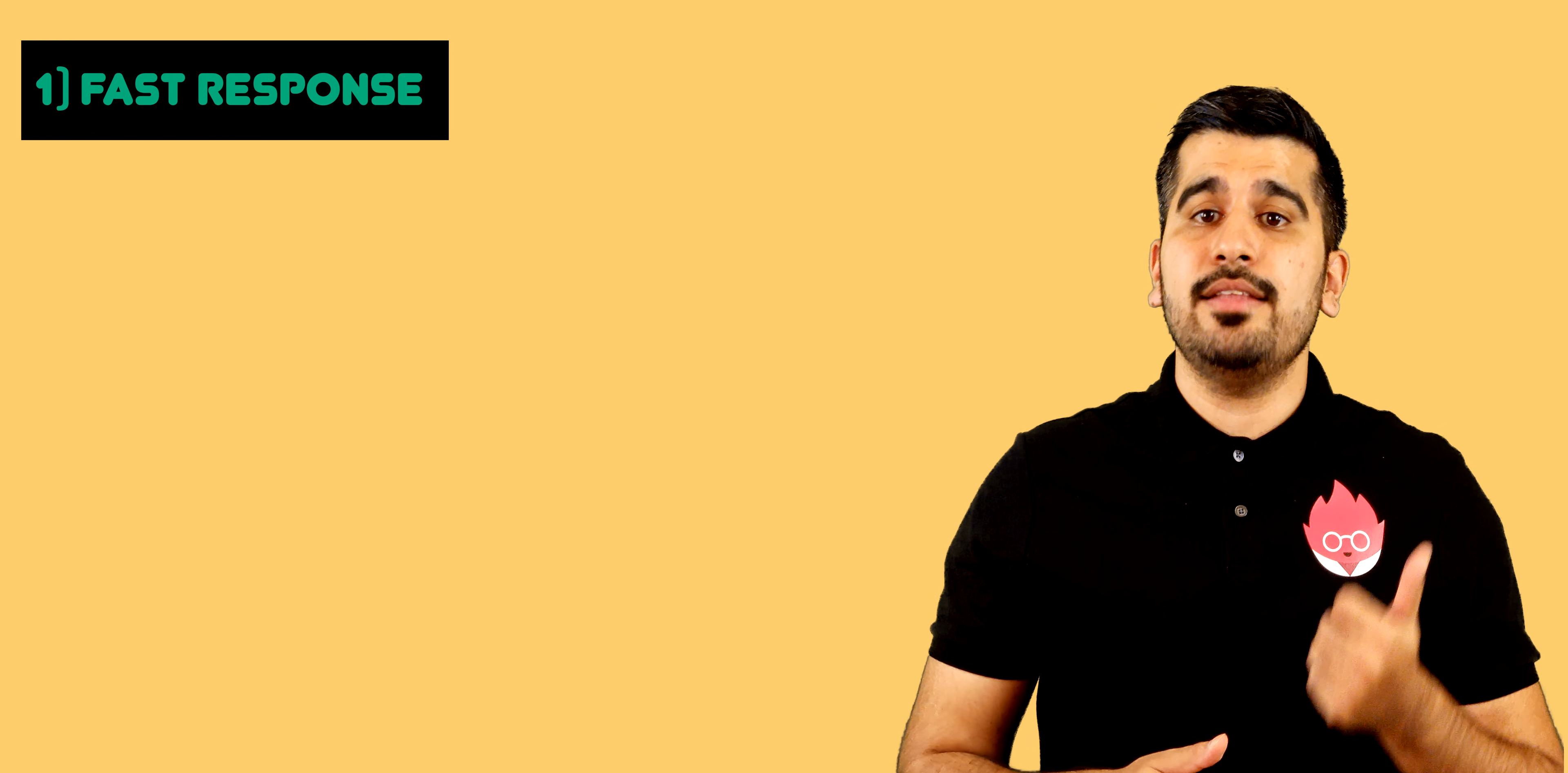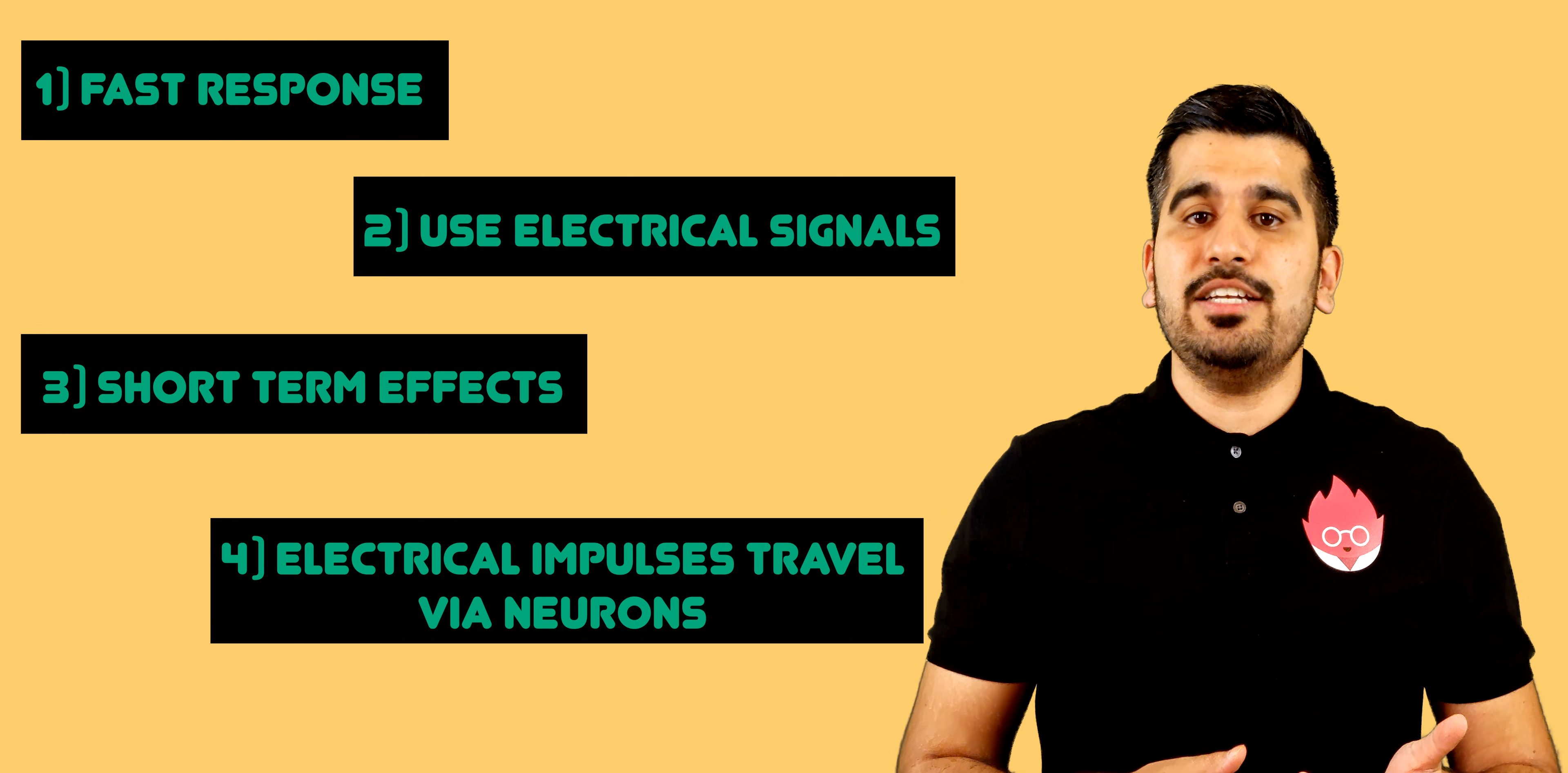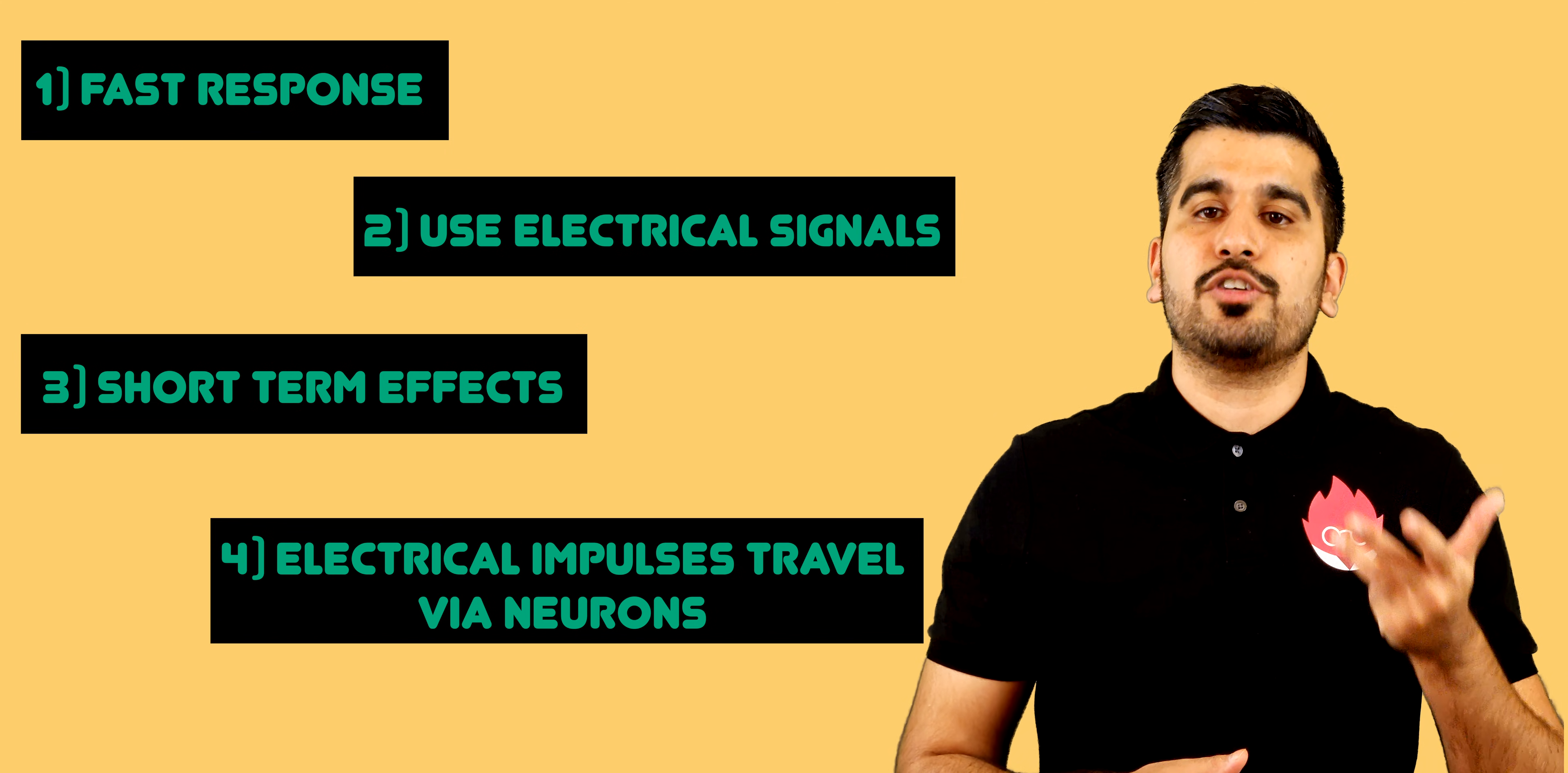The key features of our nervous system include: they are fast acting, they use electrical signals or impulses, their effects are short lasting, and electrical signals or impulses travel via neurons.